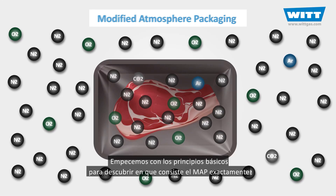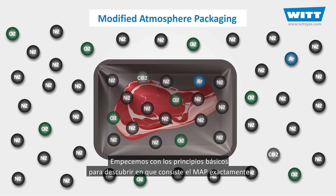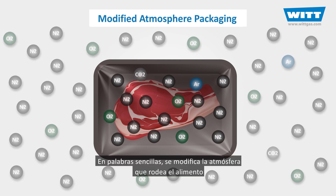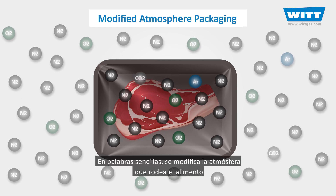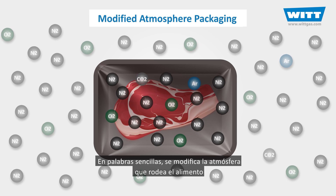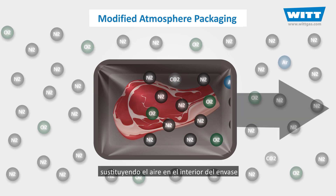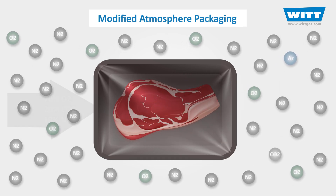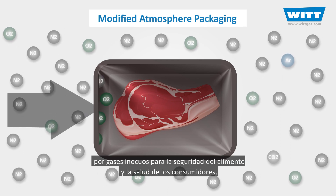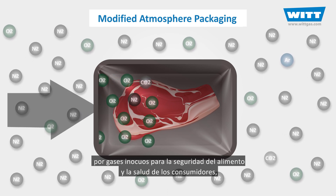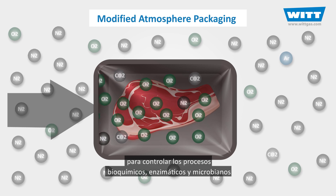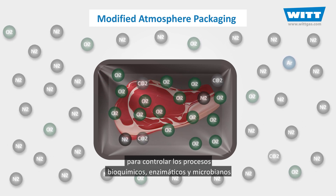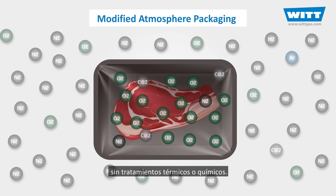So, to figure out what MAP exactly is, let's start with the basic concepts. Simply put, in this method we modify the atmosphere surrounding a food product by removing the air inside of its package and then adding gases that are safe for both food and customers' health, to control the biochemical, enzymatic, and microbial actions without temperature or chemical treatments.